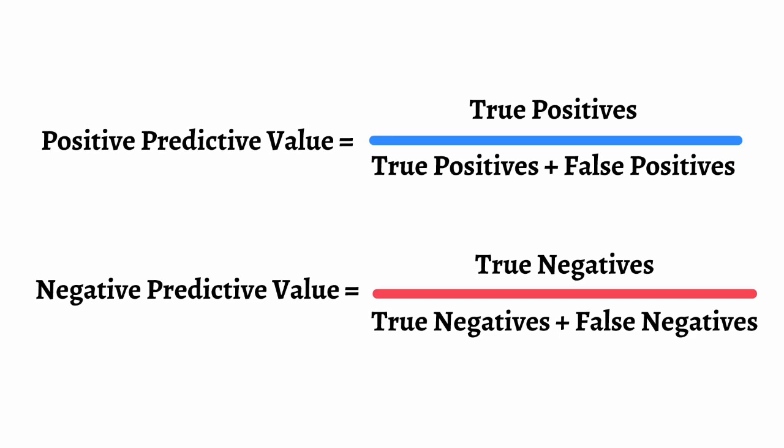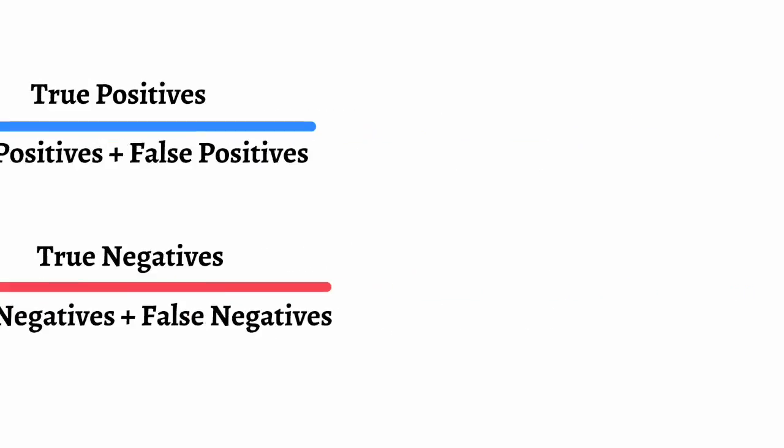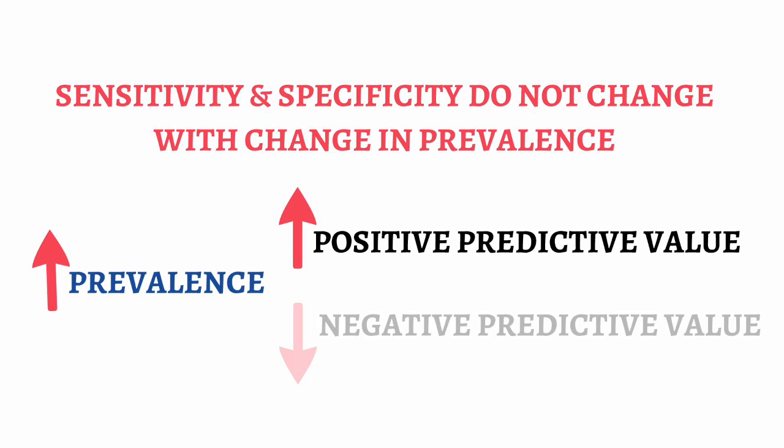One final point that is highly tested is how sensitivity, specificity, positive predictive value, and negative predictive value change as disease becomes more prevalent in a population. Remember, sensitivity and specificity do not change with a change in prevalence. However, as prevalence increases, positive predictive value increases and negative predictive value decreases, and vice versa.